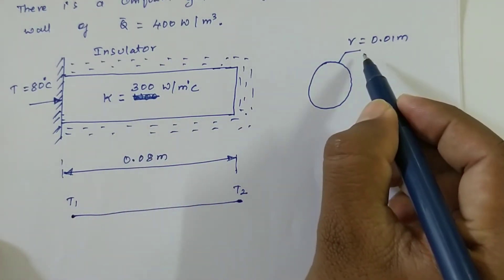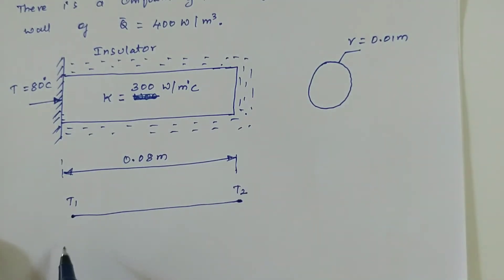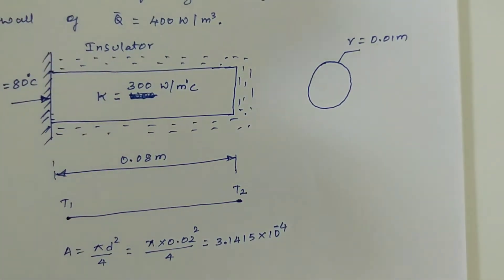Since radius is given, we need to find out area. That area is equals to pi D square by 4. So pi into 0.2, 0.2 divided by 4, equals 3.1415 into 10 power minus 4. This is the value of area that will be obtained for this particular problem.